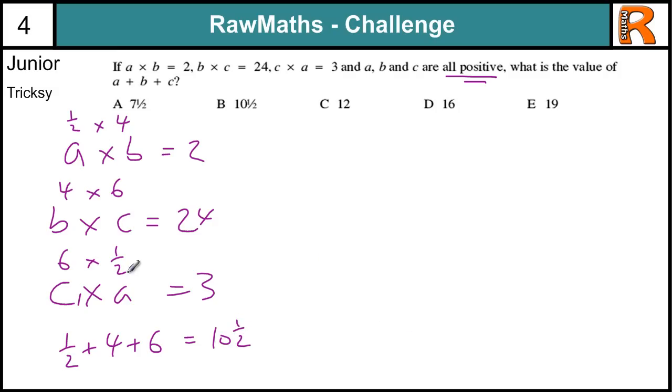Now that requires a lot of luck to solve it that way. But if we actually looked at what we had here, a times b, and if we times that by b times c, and we times that by c times a, that would give us 2 times 24 times 3, and 2 24s are 48, and 48 times 3 equals 144. And we have got two a, so we have a squared, and we have got b squared, and we have got c squared. So that would tell us that abc has got to be equal to 12. The square root of that is 12.